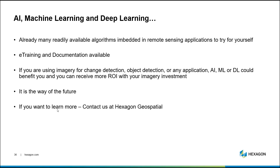To wrap up: AI, machine learning, and deep learning have many readily available algorithms embedded in remote sensing applications like Hexagon Geospatial's Erdas Imagine for you to try. You don't have to reinvent the wheel or create new AI algorithms — you can simply use the many that are available within these applications. There's lots of e-training and documentation available for step-by-step learning. If you're using imagery for change detection or object detection, applying these newer machine learning technologies will get you the most out of your imagery and the most return on investment.